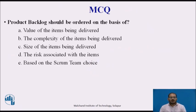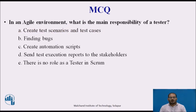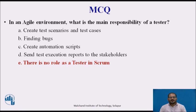Next, we will see MCQ questions to reflect on the content we learned. First question: product backlog should be ordered on the basis of — the answer is the value of the items being delivered. The product backlog contains the items that are to be delivered. Second MCQ: in an agile environment, what is the main responsibility of the tester? In an agile team, it is a cross-functional team, so there is no separate tester as all team members know the concept of testing. The answer is E — there is no dedicated role of tester in Scrum.